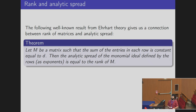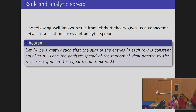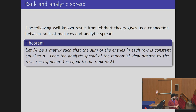From Ehrhart theory, one very nice condition for matrices where the row sum is constant is that since we have integer entries, the analytic spread of the ideal we get by taking the exponents as monomials is exactly the rank of the matrix. That's the first step to realizing that the weak Lefschetz property is actually very related to analytic spread.